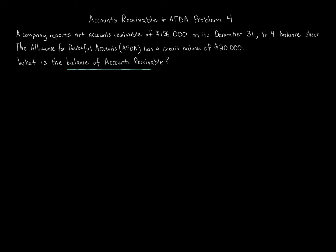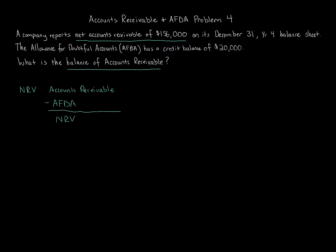We're told the company reports net accounts receivable of $156,000. What is net accounts receivable? Net accounts receivable is synonymous with NRV — net realizable value. Net realizable value is accounts receivable minus a contra asset. We subtract away the Allowance for Doubtful Accounts, and we get NRV. NRV is the same as net accounts receivable — same idea, same title, synonymous.